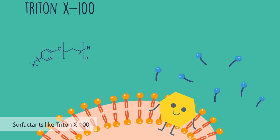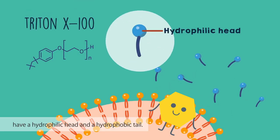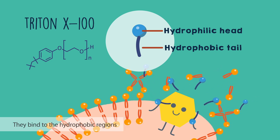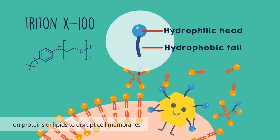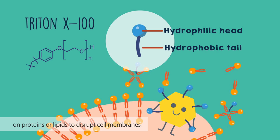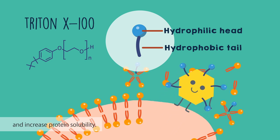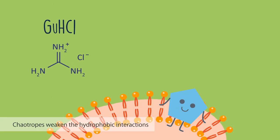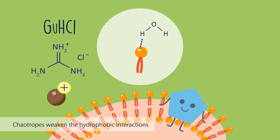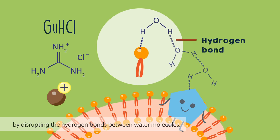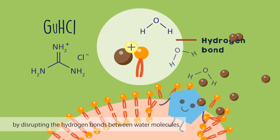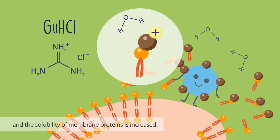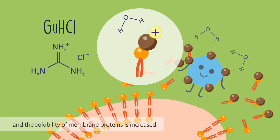Surfactants, like Triton X100, have a hydrophilic head and a hydrophobic tail. They bind to the hydrophobic regions on proteins or lipids to disrupt cell membranes and increase protein solubility. Chaotropes weaken the hydrophobic interactions by disrupting the hydrogen bonds between water molecules. As a result, the cell membranes collapse and the solubility of membrane proteins is increased.